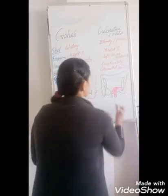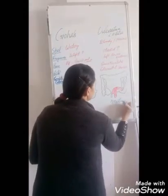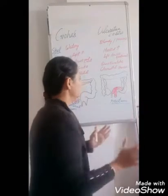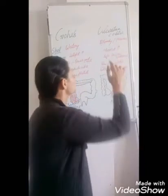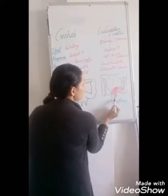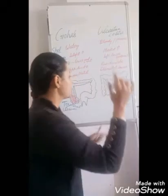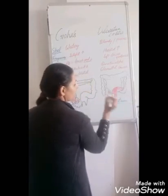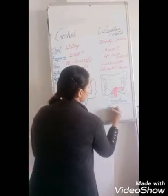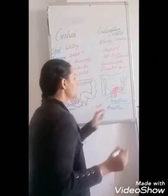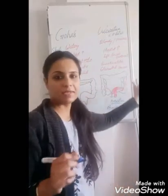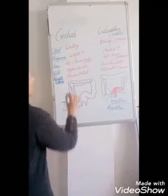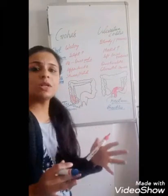In ulcerative colitis, the rectum gets affected first, and then the inflammation occurs as the disease progresses in the backward direction. First the inflammation occurs in the rectum, then progresses to affect the whole colon. When it occurs in the rectum it is called proctitis, when this area gets affected it is left-sided colitis, and when the whole colon is affected it is called proctocolitis.